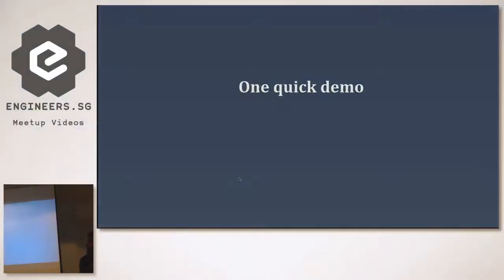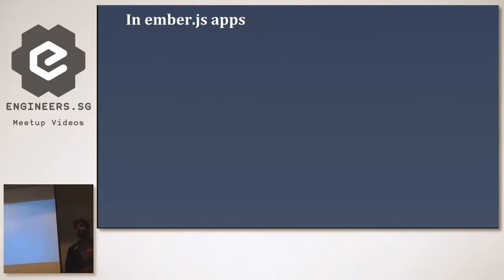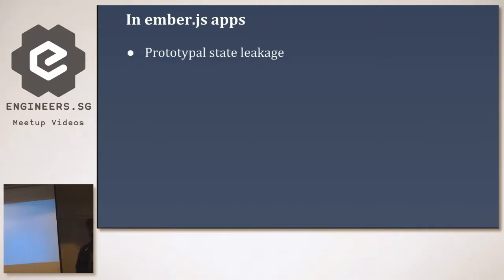Back to the presentation. I want to share the patterns that can cause memory leaks in Ember codebases. The first one is prototype state leakage. This means you have class components that get instantiated whenever rendered. Leaking the instance state into the parent class means any instances created henceforth will share the same state of the previous instance.